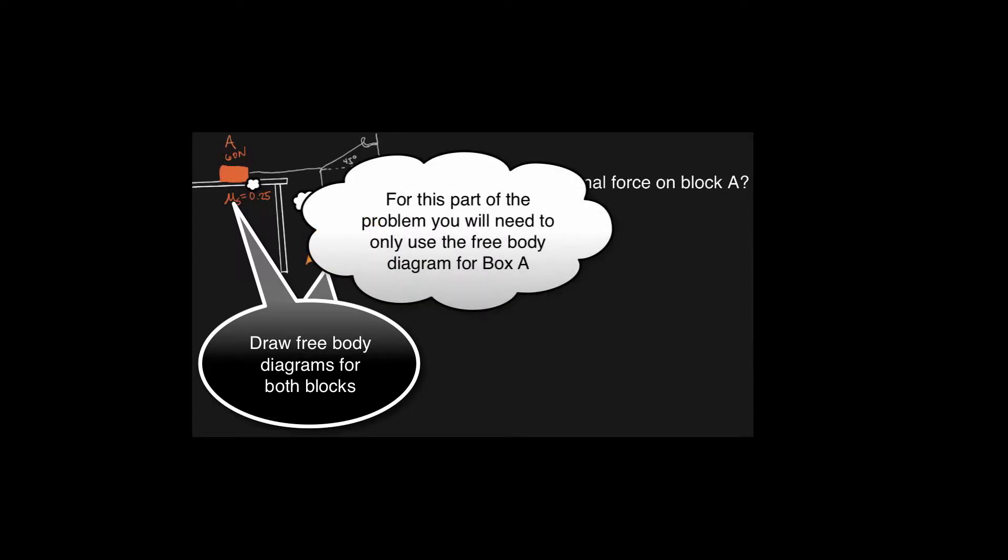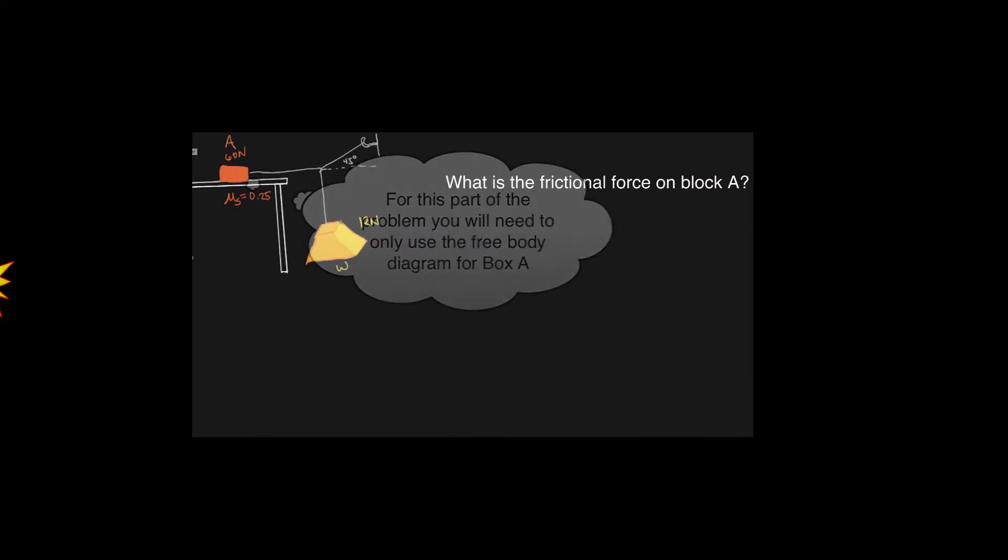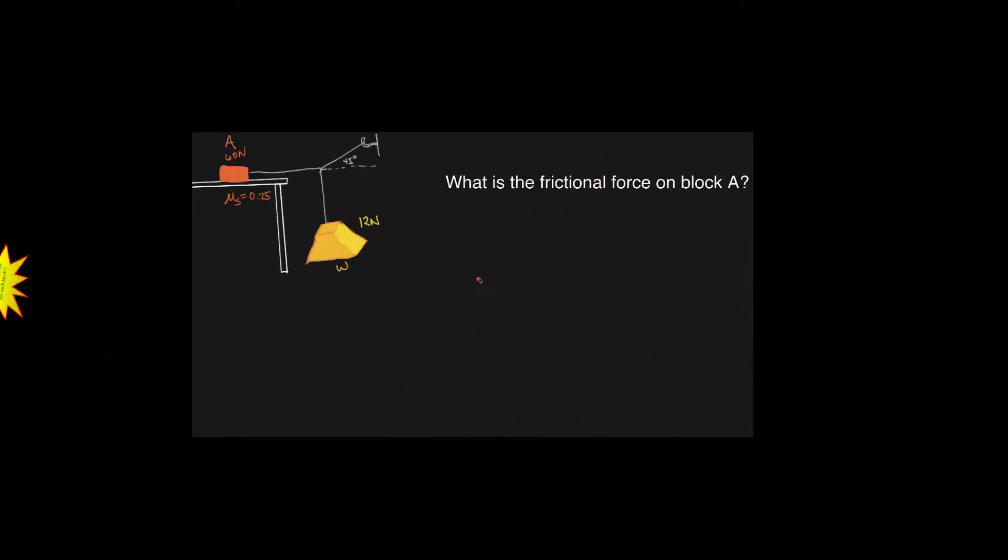Is that it? Okay, so what does the free body diagram for A look like? Tension to the right and then static friction which is smaller than the weight actually.